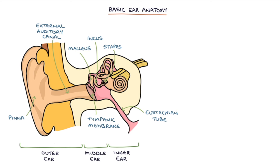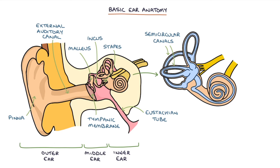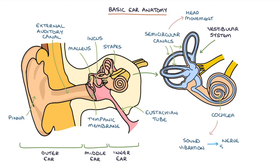The semicircular canals are responsible for sensing head movement, and this is the vestibular system. The cochlea is responsible for converting sound vibration into a nerve signal. The vestibulocochlear nerve transmits nerve signals from the semicircular canals and the cochlea to the brain.